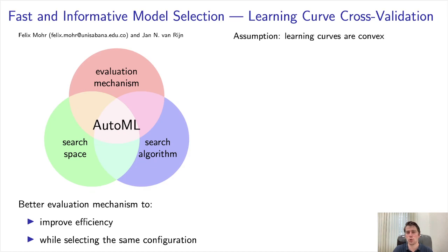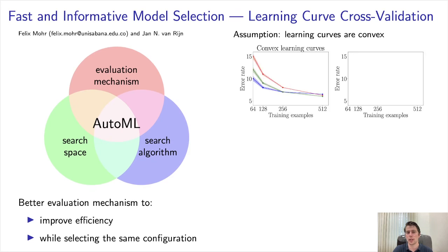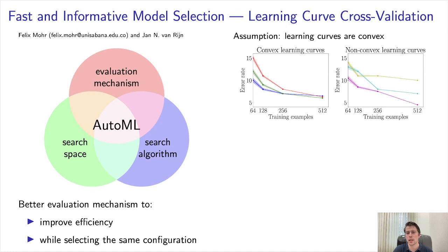We do this by means of utilizing learning curves and the assumption that learning curves are convex. We can see on the left side of this image some convex learning curves and these are way more likely to occur in practice than the non-convex learning curves that we see on the right side of this image.